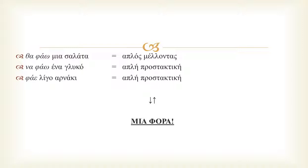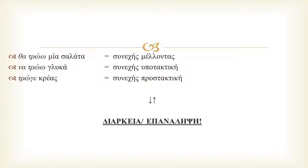Ultimately, simple future, simple subjunctive, and simple imperative — in our case θα φάω, να φάω, and φάε — are used for actions happening once. And continuous future, continuous subjunctive, and continuous imperative — in this presentation θα τρώω, να τρώω, and τρώγε — are used for ongoing or repetitive actions.